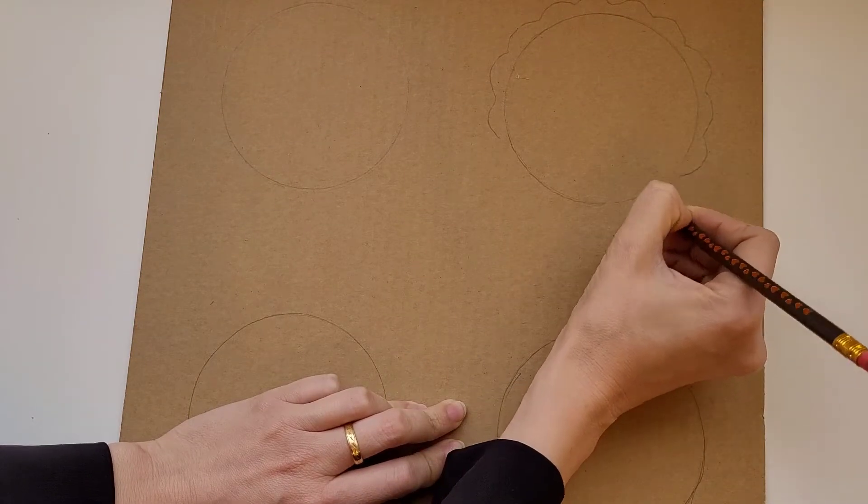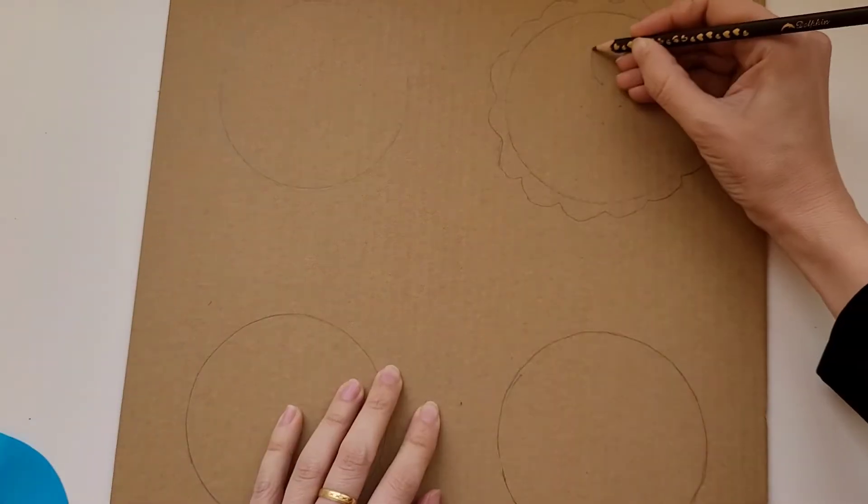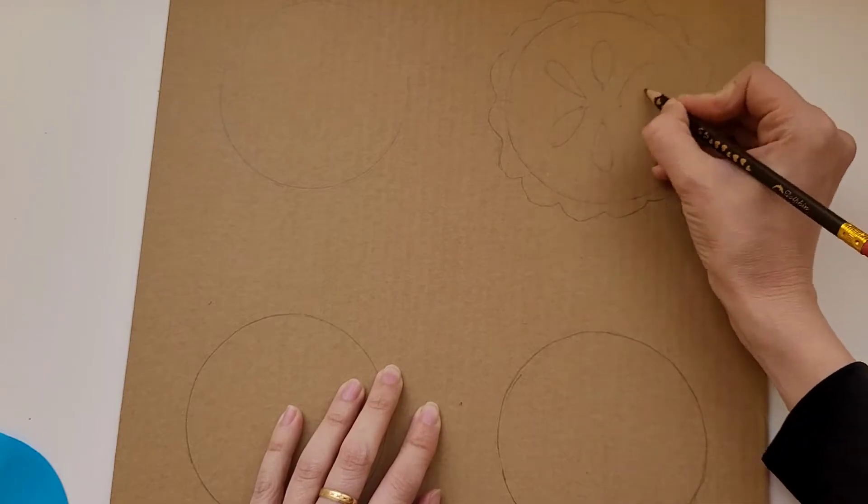Then we're going to turn these circles into pies. We can draw different patterns on the pies.